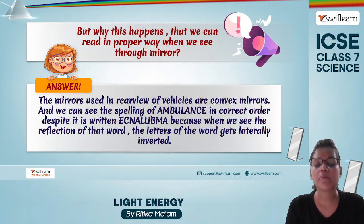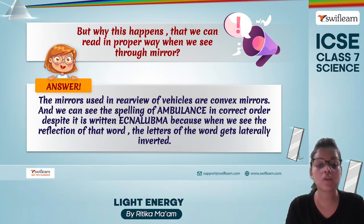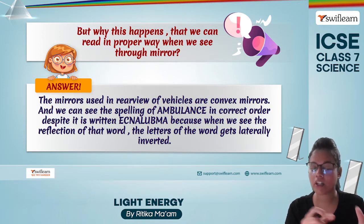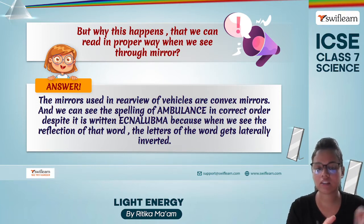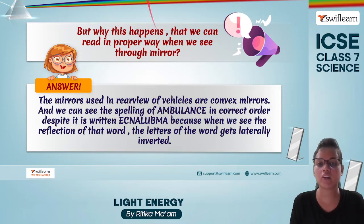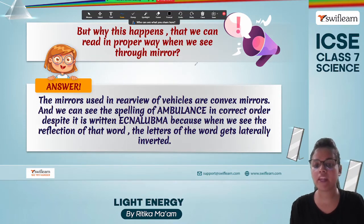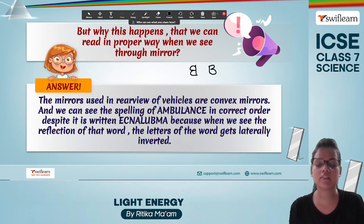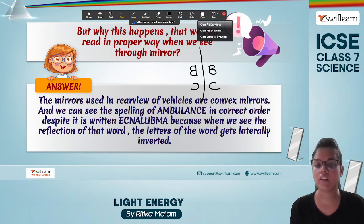The mirrors used in the rear view of vehicles are convex mirrors, and that is why we are able to see the spelling of 'AMBULANCE' in the correct order, even though it is written in reverse. What is happening is that reflection occurs and the words get laterally inverted. So if I talk about the letter B, it will appear reversed; C will appear as its mirror image. This is what is known as lateral inversion.